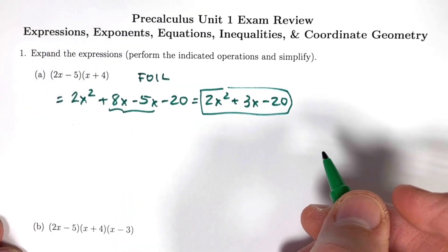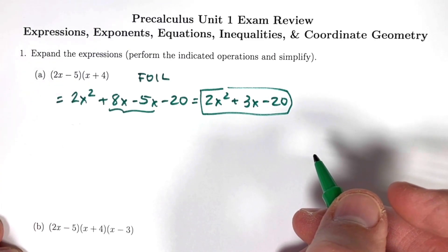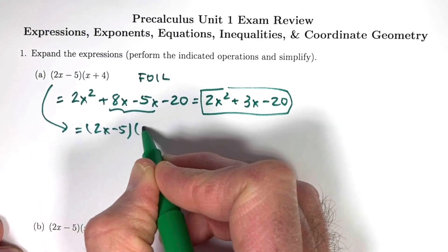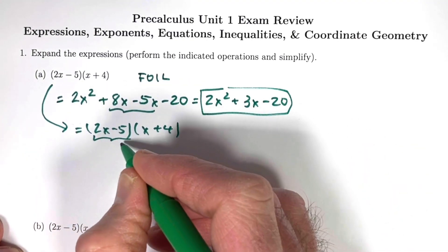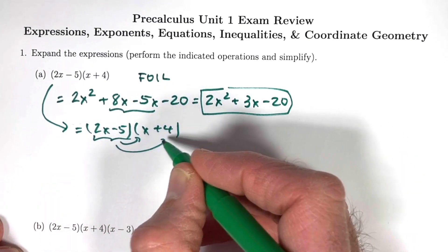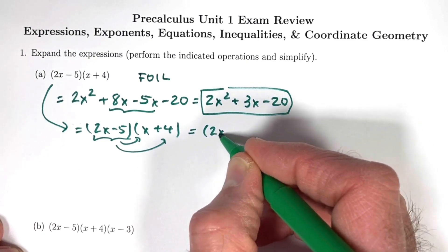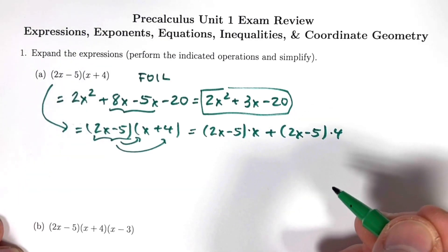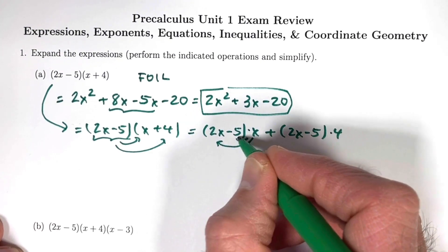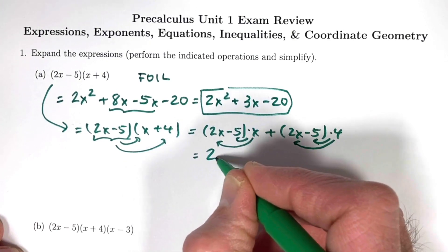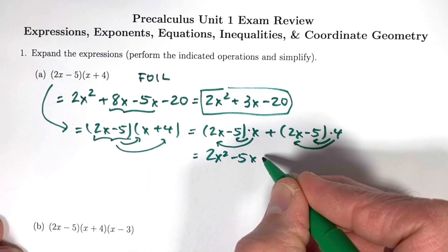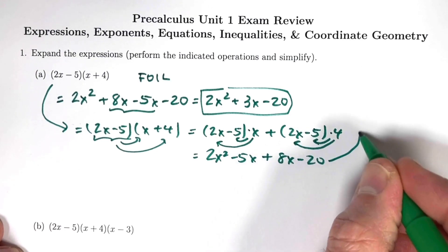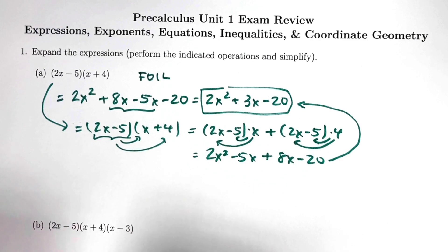If your teacher asked you to explain why the FOIL method works, the key reason is called the distributive property. Take the first binomial, 2x minus 5, and imagine distributing it through the second binomial — first multiply it by x, then multiply it by 4 and add the results. Using the distributive property two more times gives 2x squared minus 5x plus 8x minus 20, and combining like terms gives the same answer.